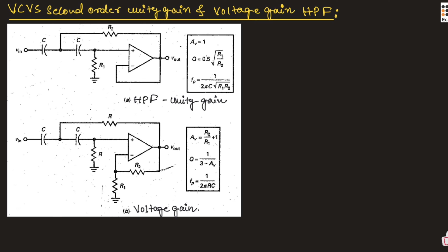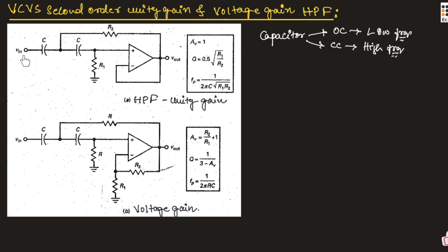For the high pass filter, since we know a capacitor will act as an open circuit for low frequencies and as a short circuit for high frequencies. We connect the capacitor in the circuit such that for low frequencies it acts as an open circuit and low frequencies are not allowed. For high frequencies, the capacitor acts as a short circuit, hence high frequencies are allowed to the circuit.